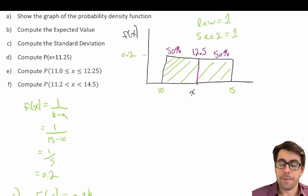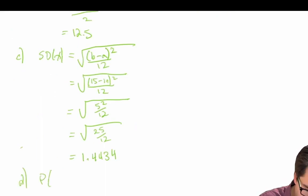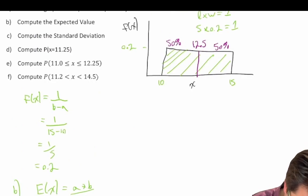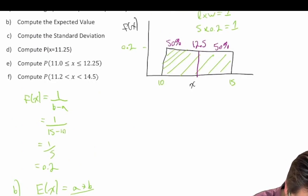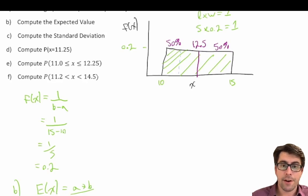Part d asks: compute the probability that X equals 11.25. The probability that X equals exactly 11.25 is zero. In a continuous probability model, the probability that X is exactly a single discrete value is always zero, because we're looking at an infinitely thin sliver with no area underneath the curve.